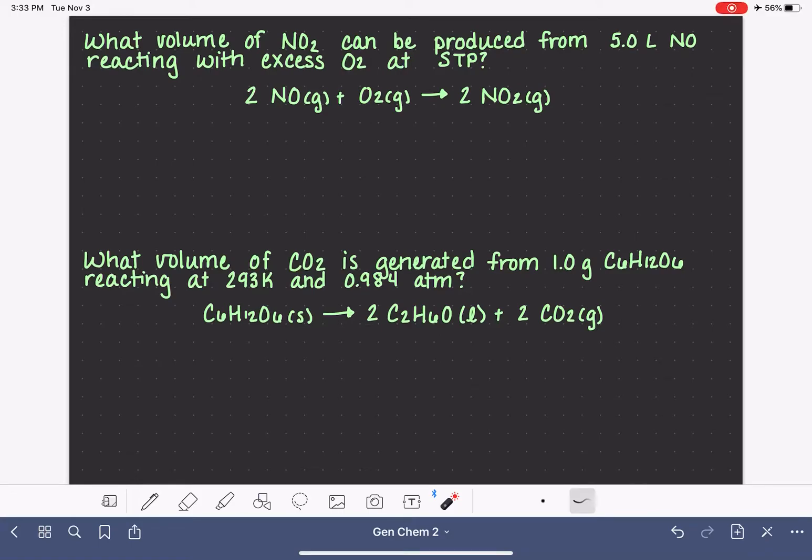In this video, I'm going to go through two examples of solving stoichiometry problems that require us to use the ideal gas law, PV equals NRT, or some sort of gas-related equation.